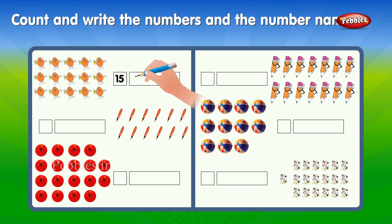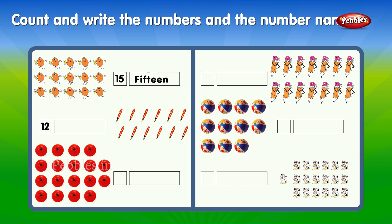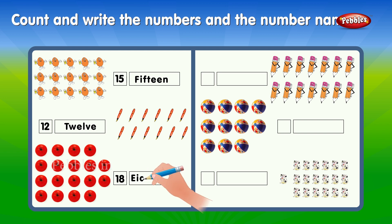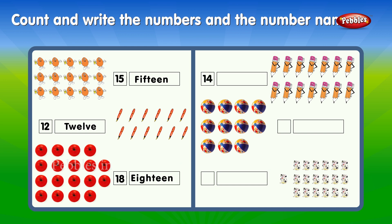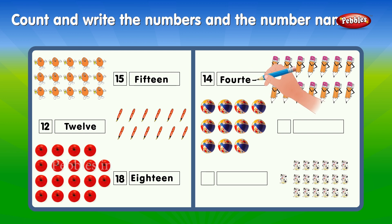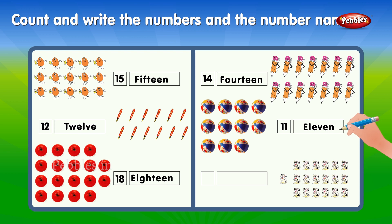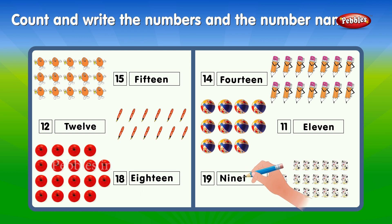Count and write the numbers and the number name. 15: F-I-F-T-E-E-N. 12: T-W-E-L-V-E. 18: E-I-G-H-T-E-E-N. 14: F-O-U-R-T-E-E-N. 11: E-L-E-V-E-N. 19: N-I-N-E-T-E-E-N.